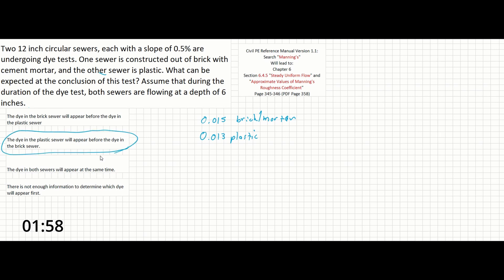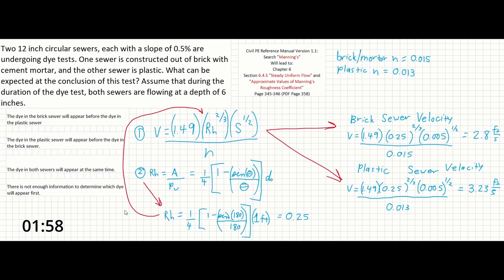The alternative would have been to have solved for the hydraulic radius of a one-foot diameter sewer, and then used that to find the velocities of both sewers. For certain problems, understanding theory is all you need. And in this case, that's all it took to get us our answer.